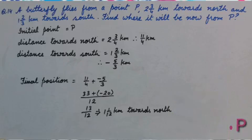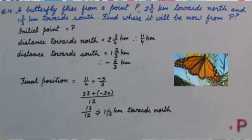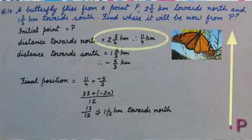From where it starts towards north and covers 2 and 3 by 4 km. It means it covered 11 upon 4 km.